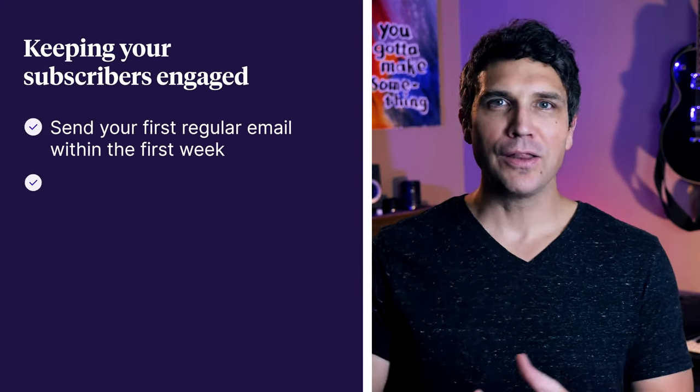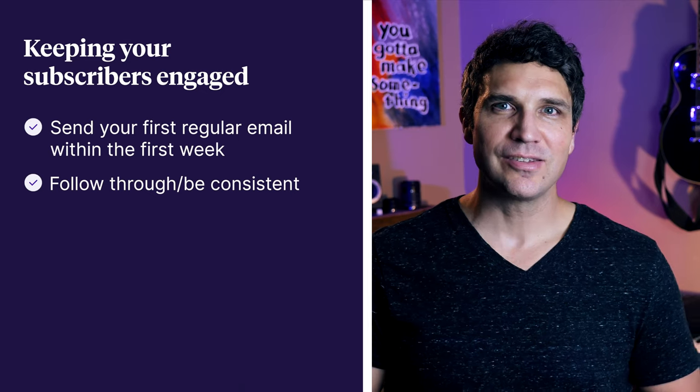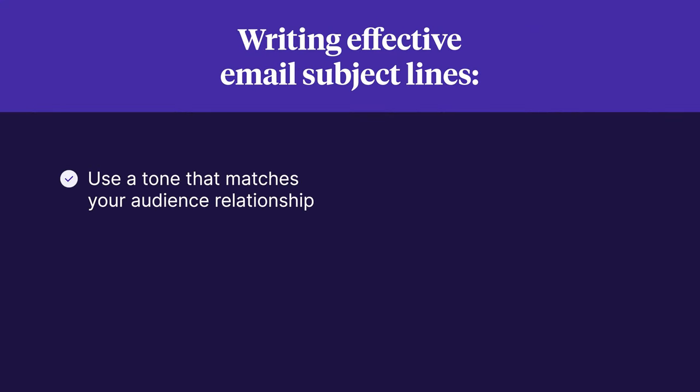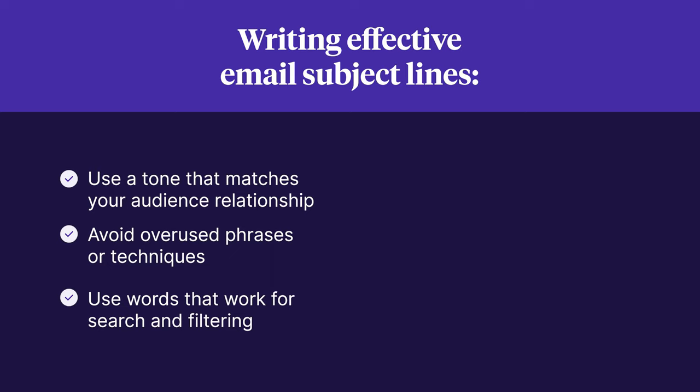Follow through and be consistent with your newsletter. If you tell subscribers you send a weekly newsletter every Thursday morning, it'll be a lot easier to keep people engaged if you stick to that. People like predictability. Give special attention to your subject line — great subject lines are like well-designed book covers. Many creators treat the subject line like an afterthought, but it could make all the difference. Follow these guidelines: use a tone that matches your audience relationship; avoid overused phrases; use words that work for search and filtering; use the five W's and one H — Where, What, Why, When, Who, and How; and try to limit your subject line to 50 to 65 characters.